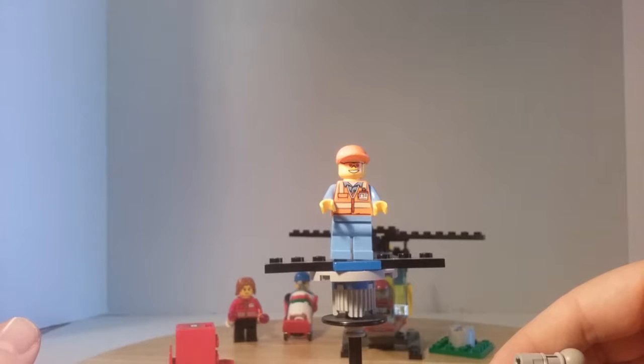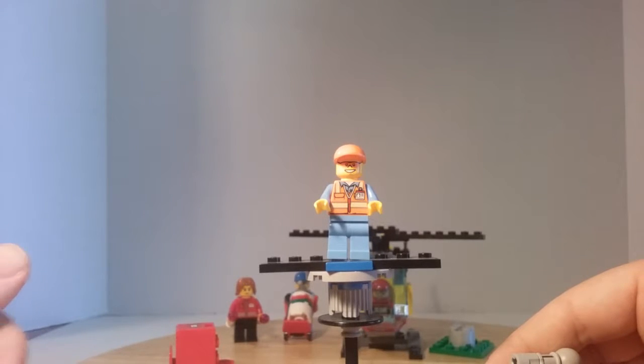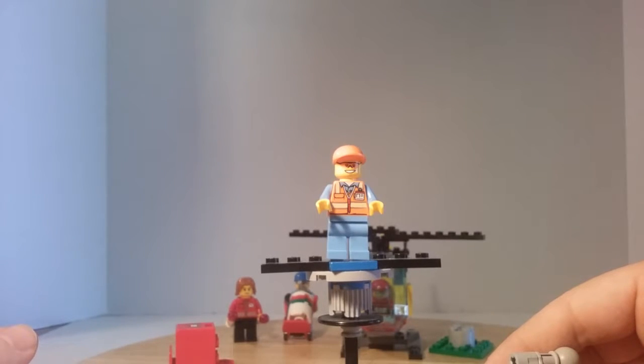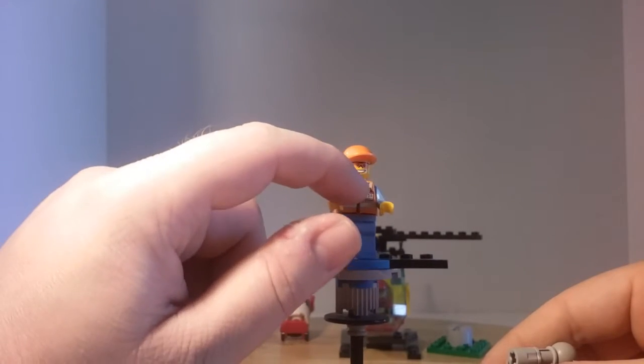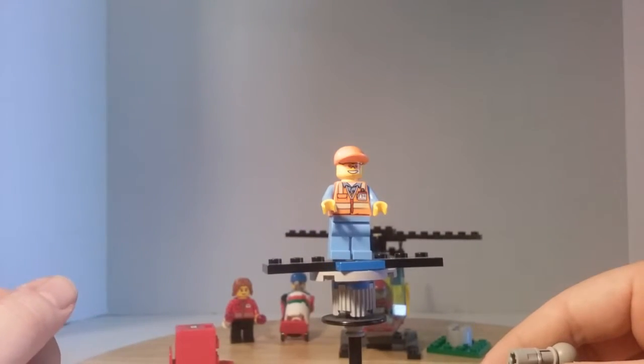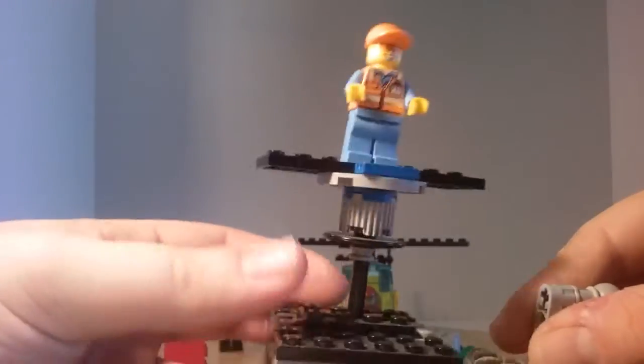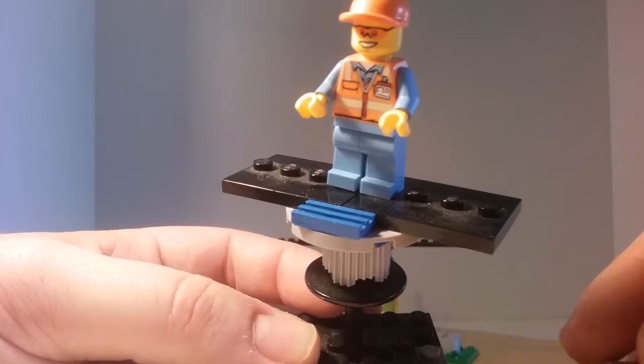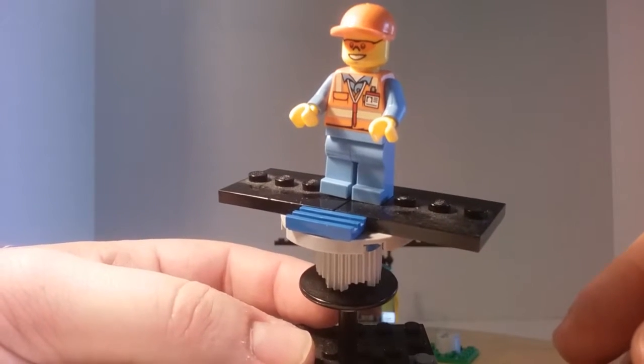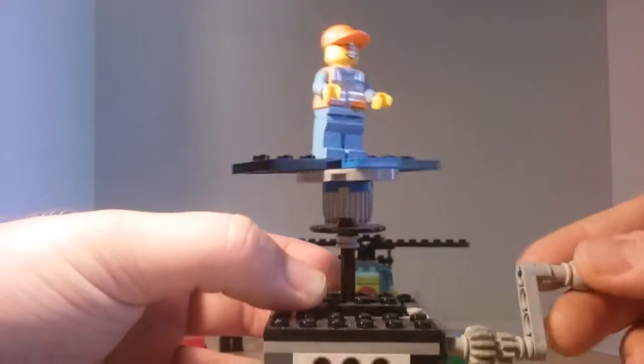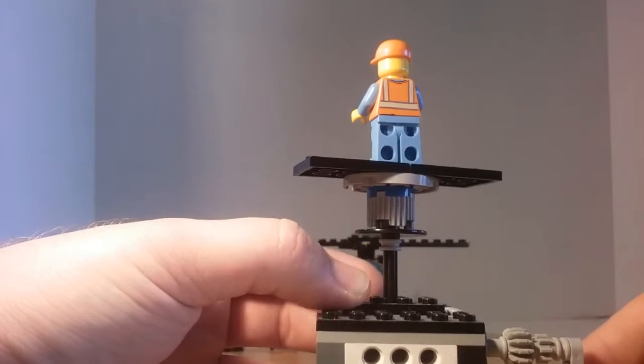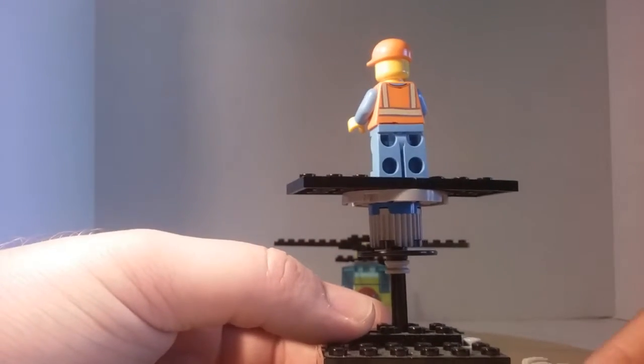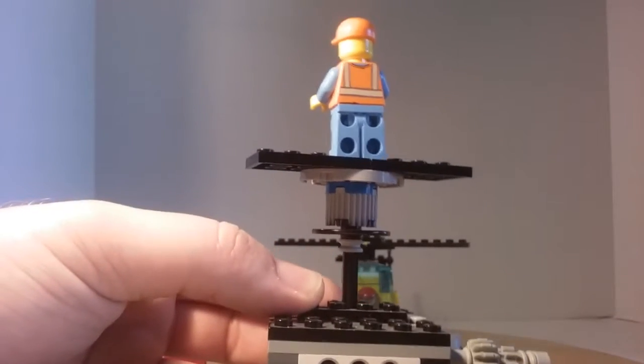He has a very awesome looking torso print with name tag, jacket, a shirt underneath, vest, pocket, pen, with lanyard or string that goes around his neck. And a very cool head print on the back of the vest and shirt of the torso.